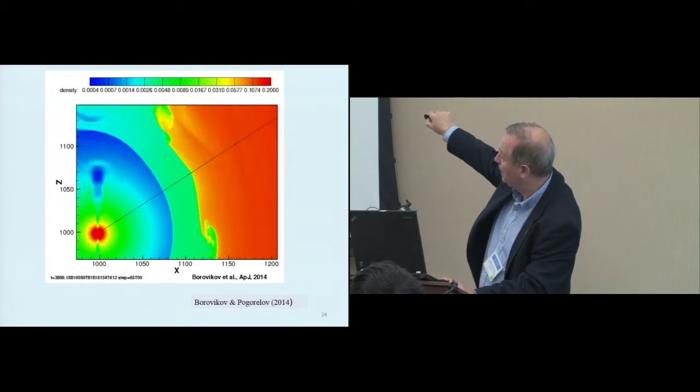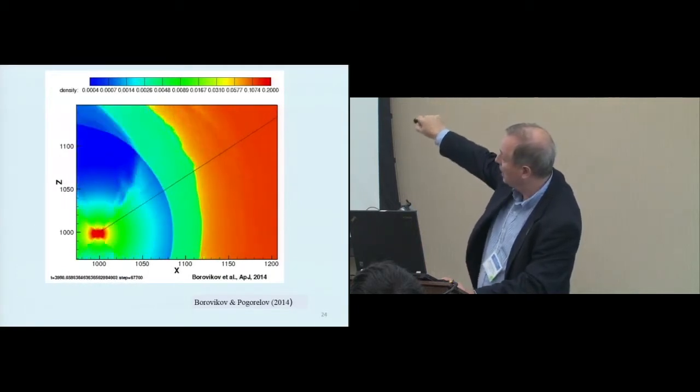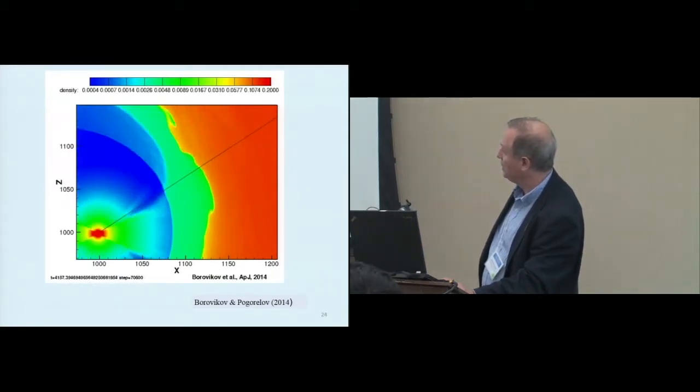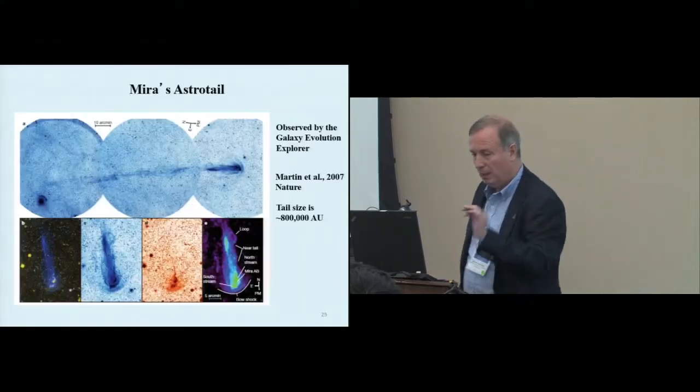I will show you the animation of this instability. Voyager 1 is here. This is the current direction of the Voyager 1 trajectory. We explained that.